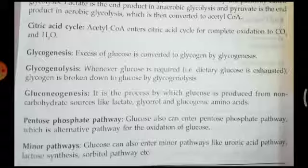Gluconeogenesis: 'neo' means new and 'genesis' means synthesis, so it is a synthesis or anabolic pathway. The synthesis of glucose from non-carbohydrate sources is called gluconeogenesis. It is the process by which glucose is produced from non-carbohydrate sources such as lactate, glycerol, and glucogenic amino acids. Amino acids are not carbohydrates, and hence they are converted to glucose by gluconeogenesis.